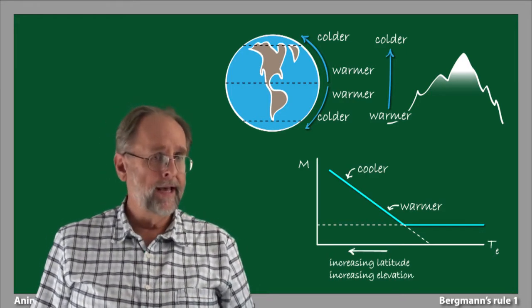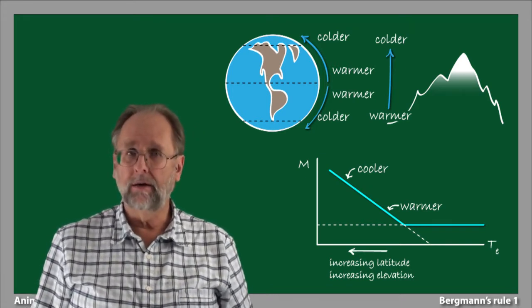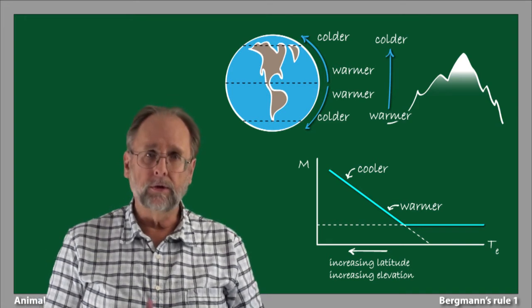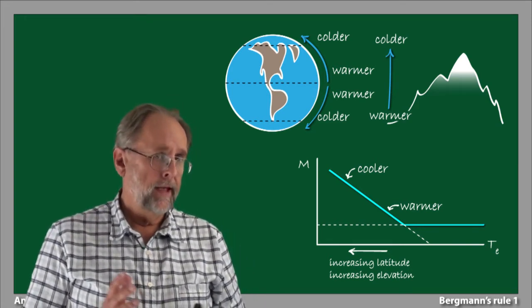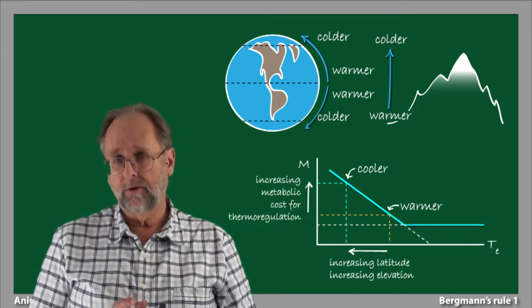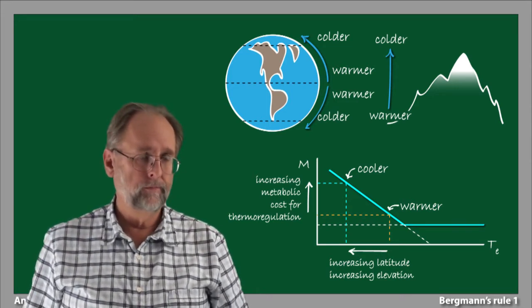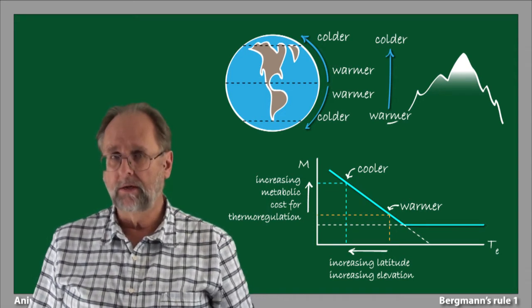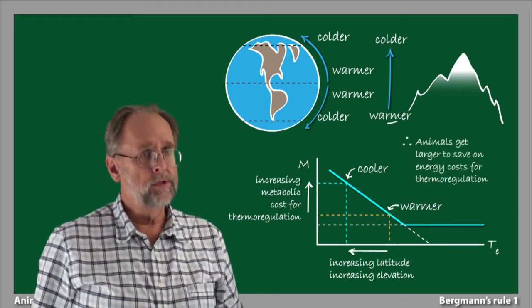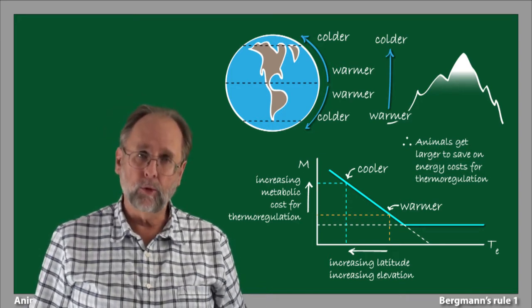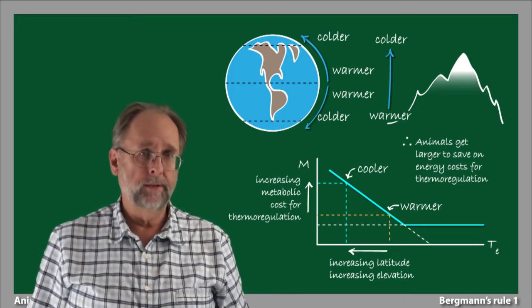As we go to higher and higher latitudes or to higher and higher elevations, environmental conditions shift to colder and colder temperatures. And this means that metabolic costs for thermoregulation will increase commensurately. It's a fairly simple leap of logic from there to conclude that animals get larger to offset this increasing metabolic demand for thermoregulation. It's quite simple, really.